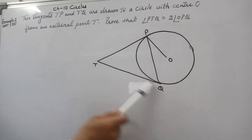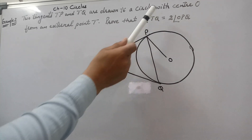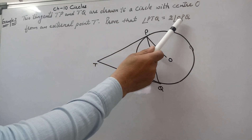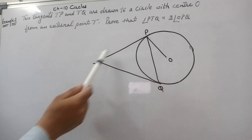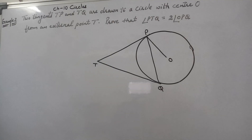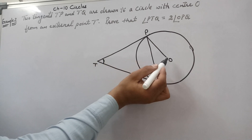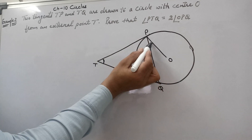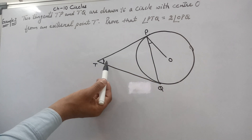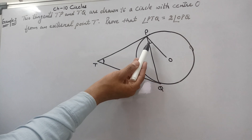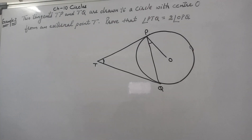We have to prove that angle PTQ is double of angle OPQ. So angle PTQ is this angle here, and angle OPQ is this angle here. We need to prove that this angle is double of this angle. Let's start — but before doing this question, we should know the basics of circles.